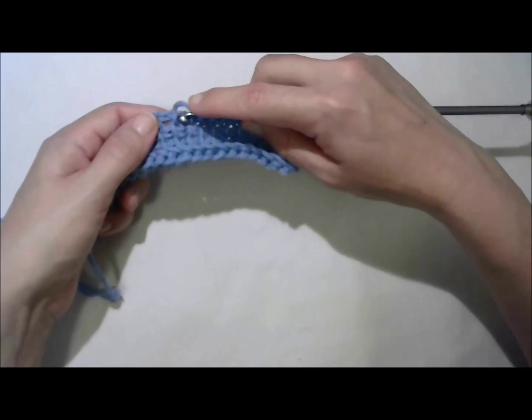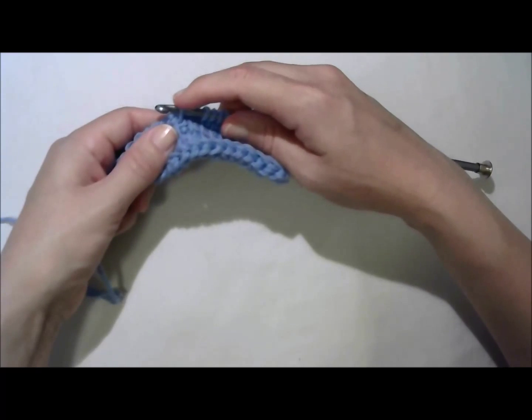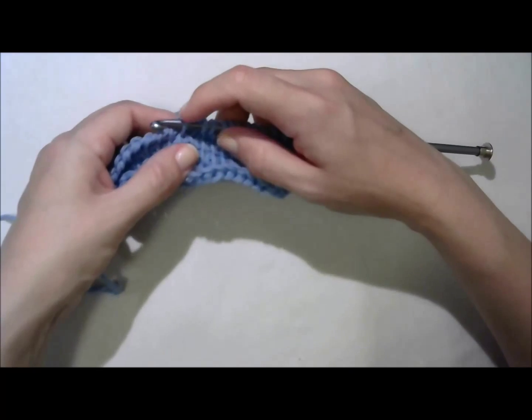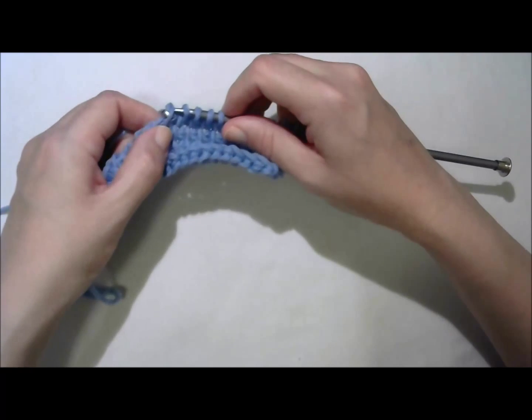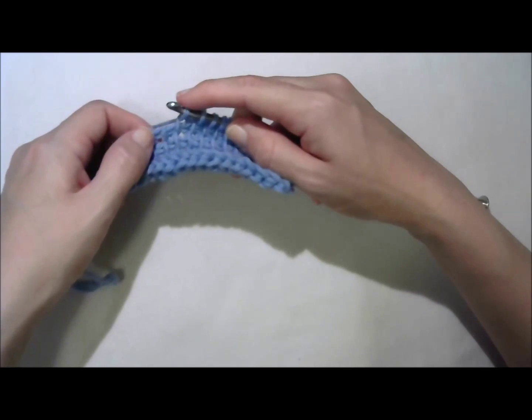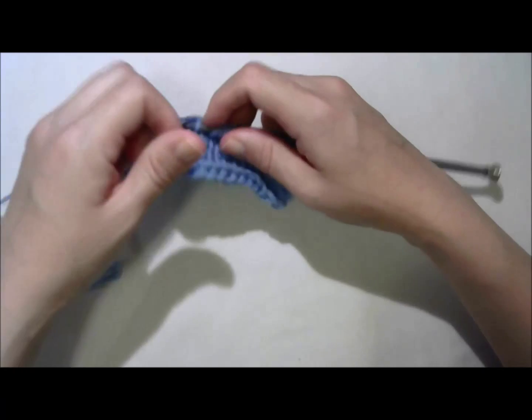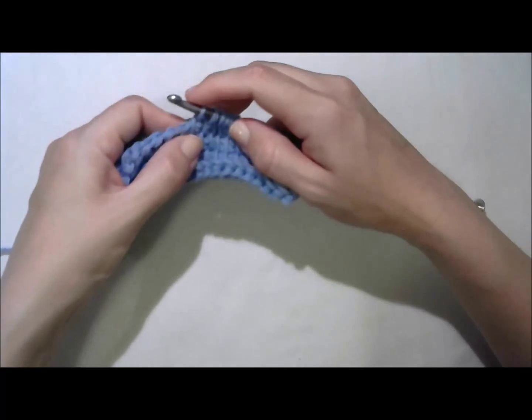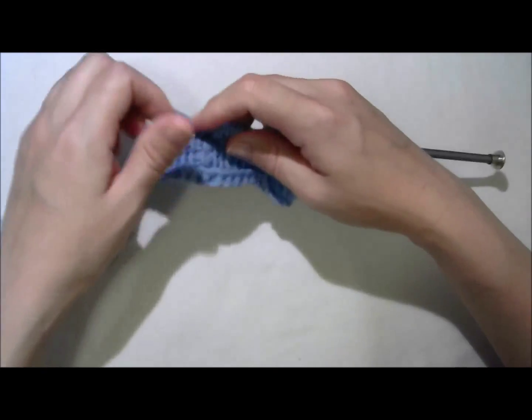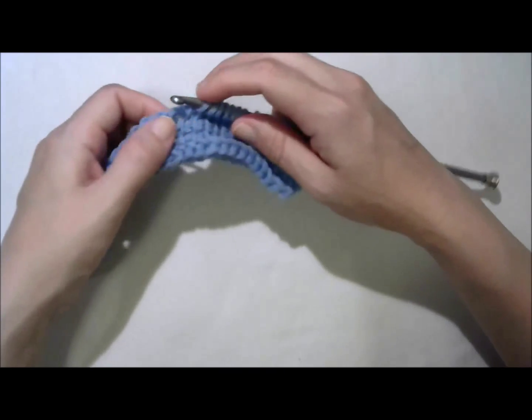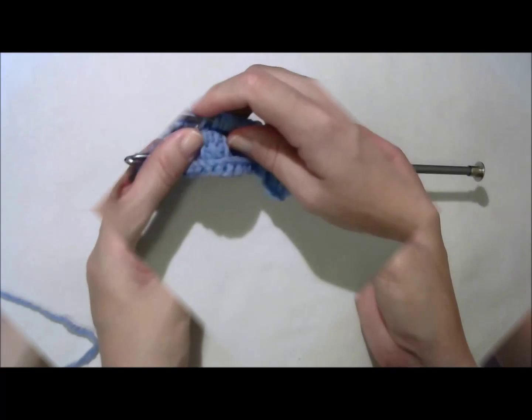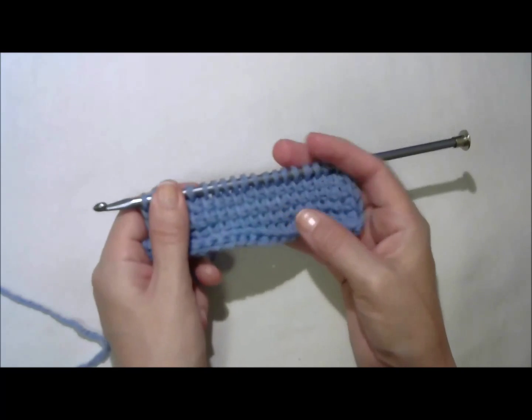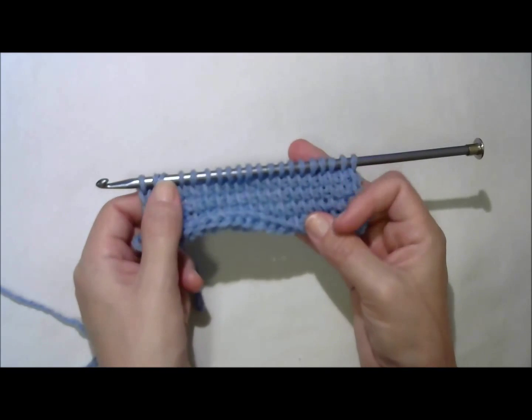They stack right on top of each other. For my next stitch, I push in from the right to the left, in the front of the work, through that vertical bar. Yarn over, draw up a loop, and continue. Drawing up a loop through every vertical bar, all the way to the end. Here I am with all my active live loops. My forward pass is done.